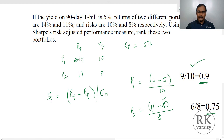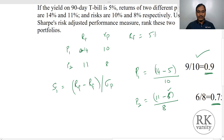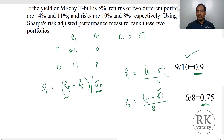What we are measuring here is: for every unit of risk you are taking — where the denominator is the standard deviation of the portfolio — whether your portfolio is yielding a positive return or not. For every one unit of risk, Portfolio 1 is yielding 0.9 as a return and Portfolio 2 is yielding 0.75 as a return. That is why Portfolio 1 is considered superior. The same analysis can also be done for individual securities.